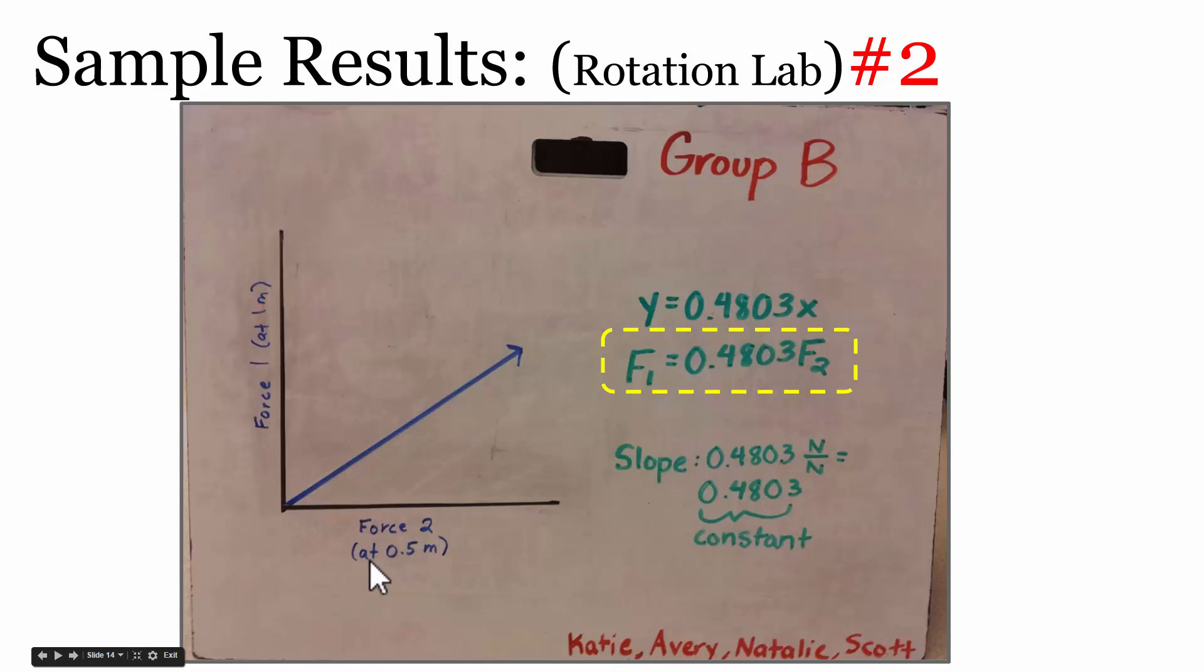Another group chose to apply their independent variable force, or force 2, at half a meter away, so half the distance away from the point of rotation. When they changed the size of force 2 and measured its effective change on force 1, they found that force 1 each time was about equal to 0.48 or about 0.5 times whatever their applied force was. So when they applied a force of 5 newtons at half a meter, it took about 2.5 newtons at a meter to rotationally balance it.